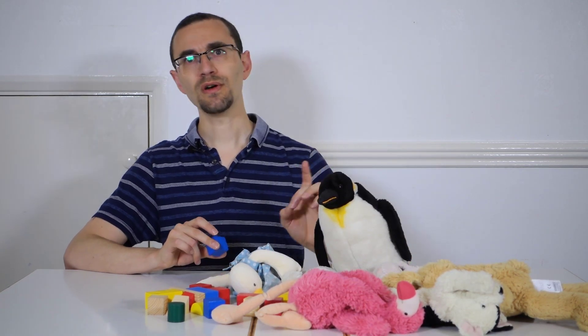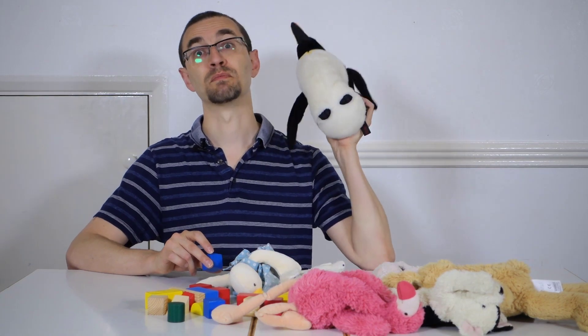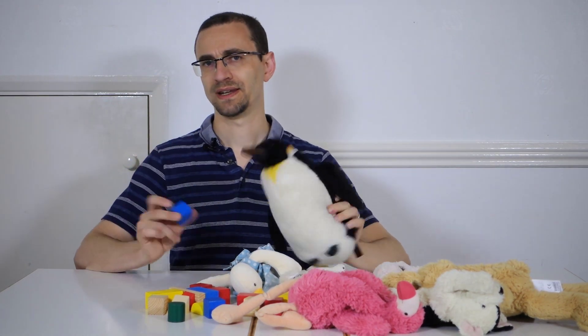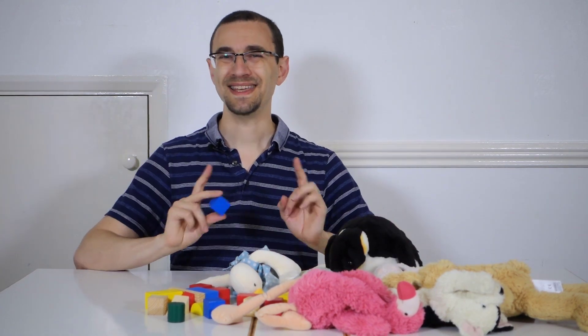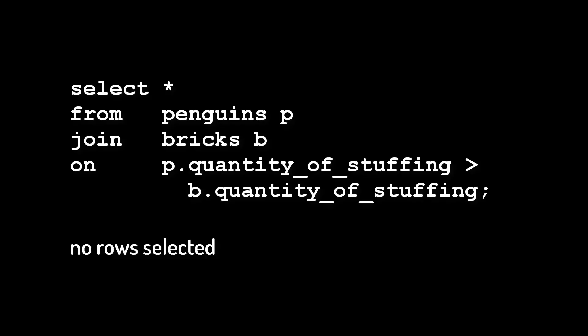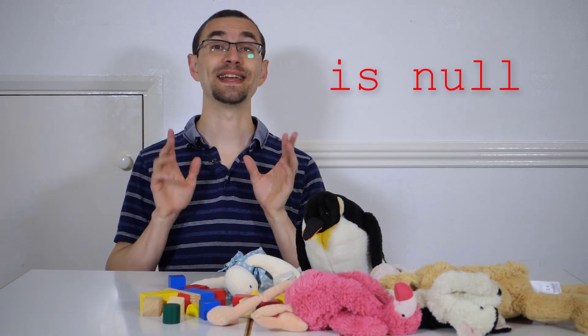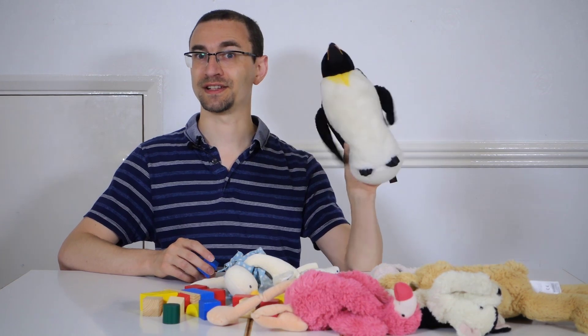But let's ask a different question: what if we're asking whether the penguin has more stuffing than the brick? Intuitively the answer is yes — the penguin has loads, the brick has none. But if we're saying that this value is greater than null, the answer is unknown, and so the row isn't returned.